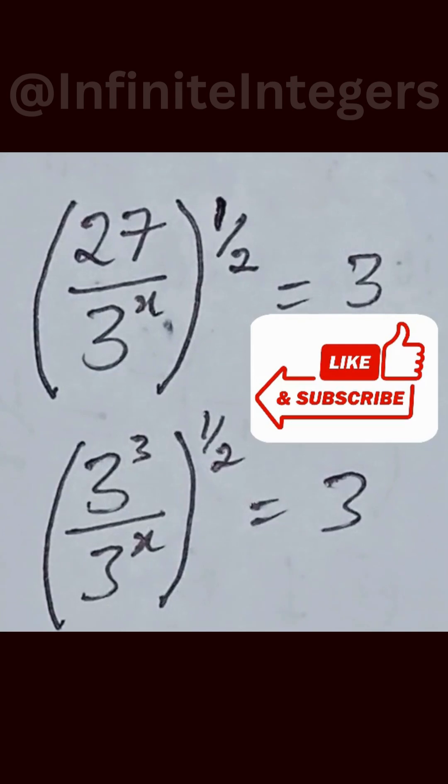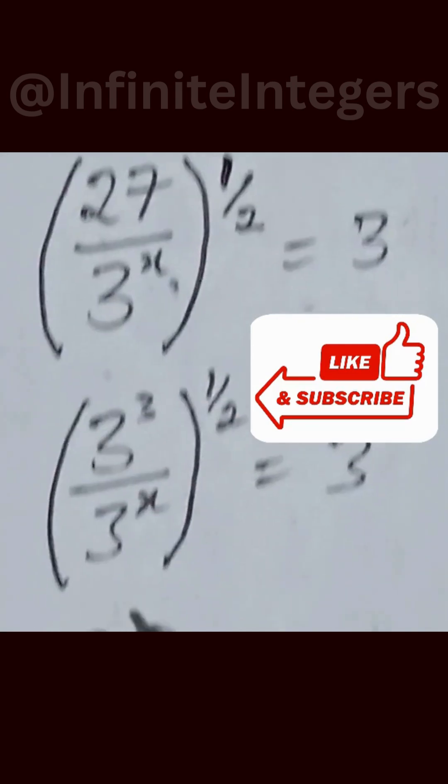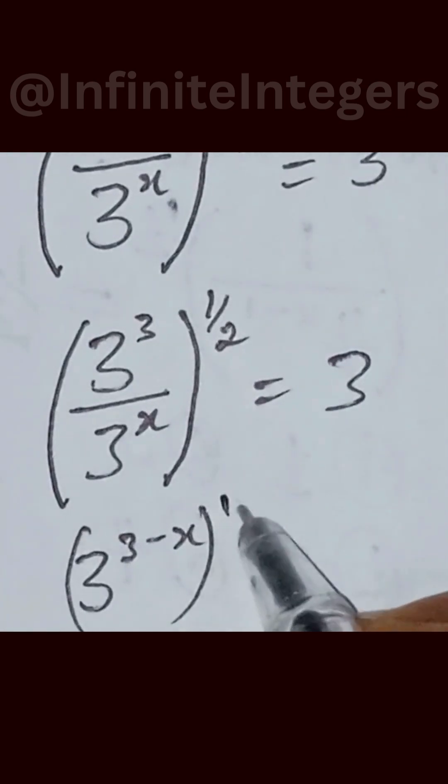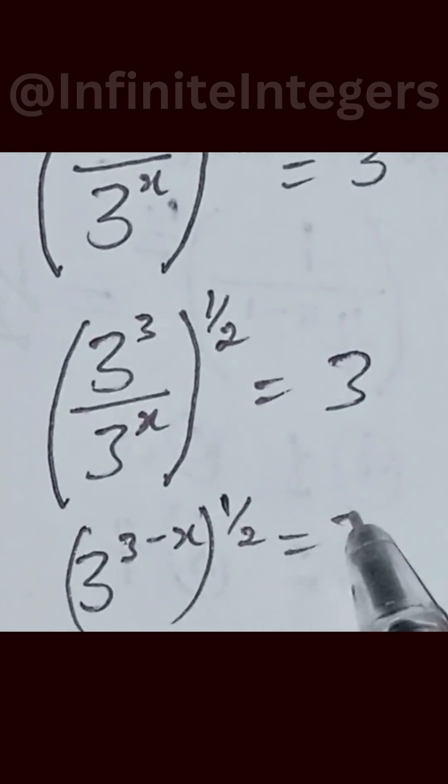Then we write this as 3 raised to the power 3 minus x using the exponent rule, then into bracket raised to the power half equal to 3.